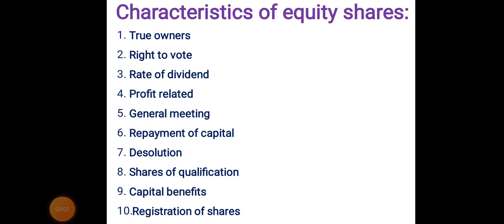If the director has given consent and there is a provision in the memorandum of association, shares can be given to directors — these are called shares of qualification, making that director also an equity shareholder. As equity shares are registered in a recognized stock market, they will get the benefit of price fluctuation. So these are the characteristics of equity shares.